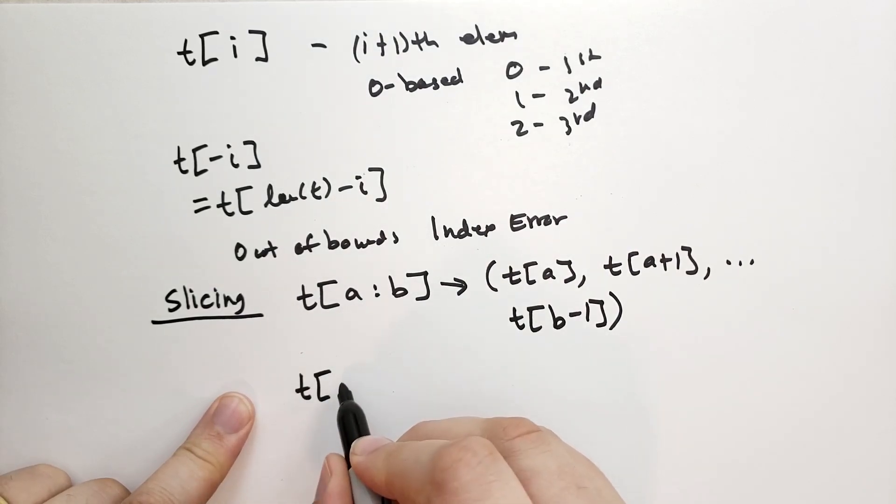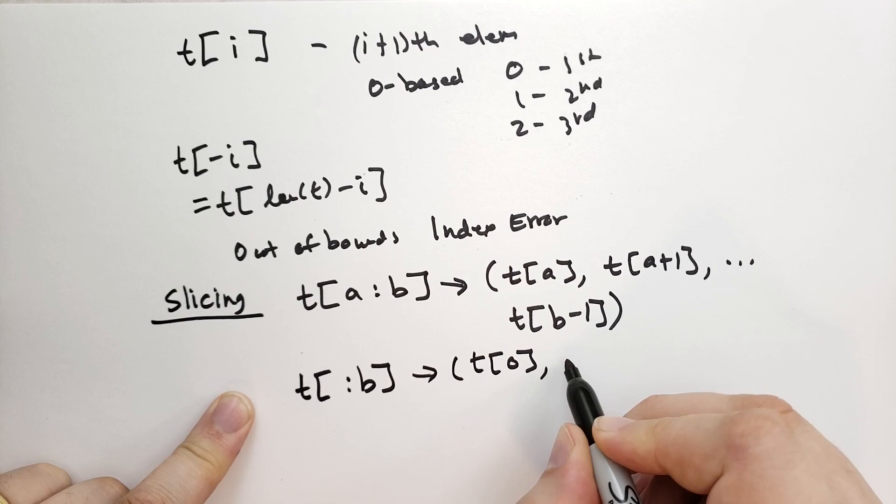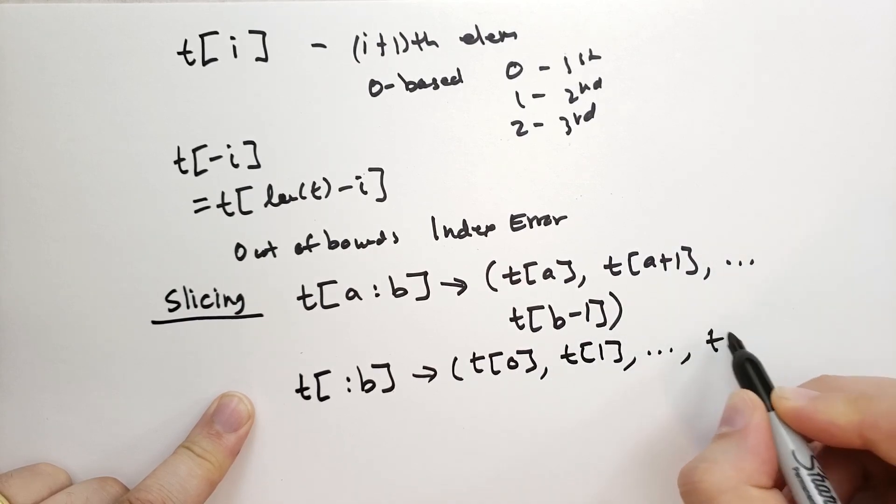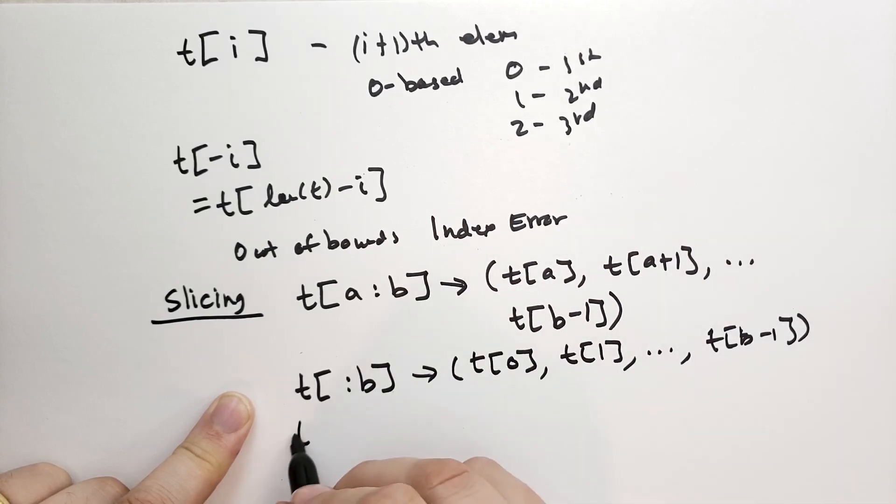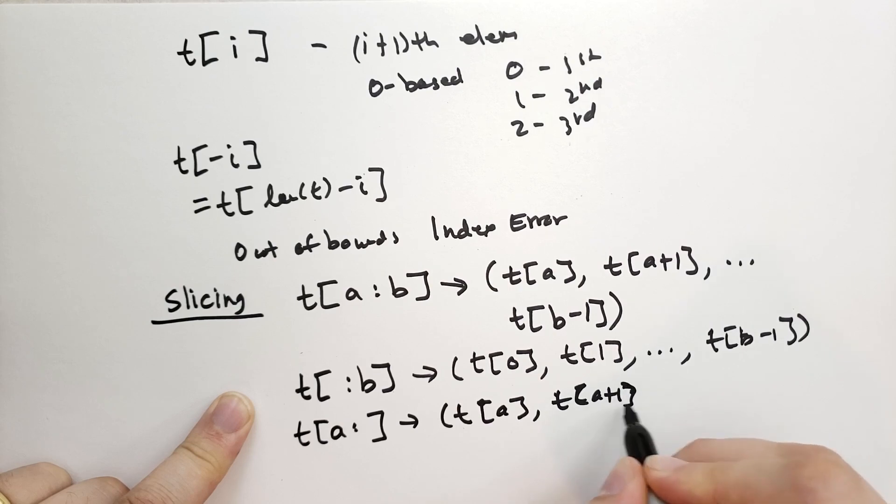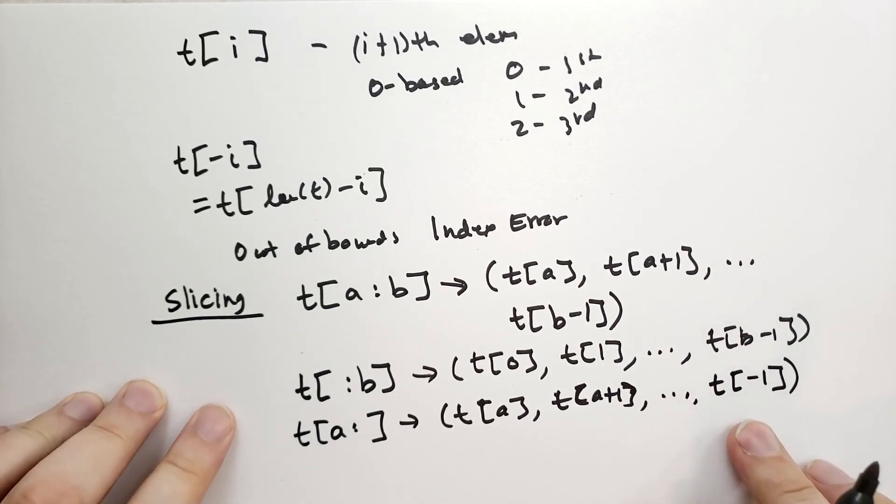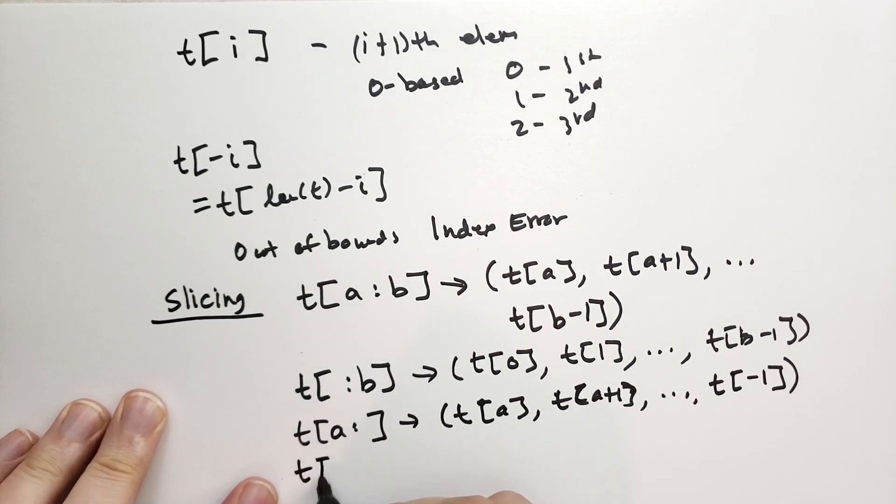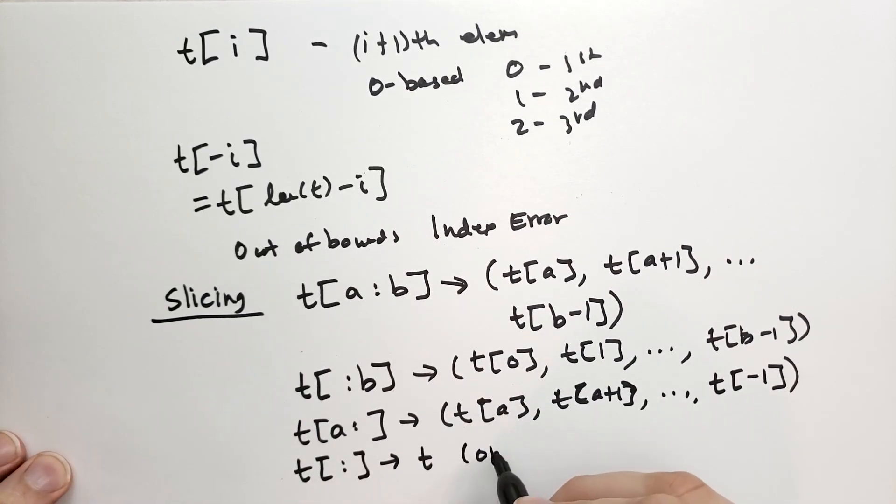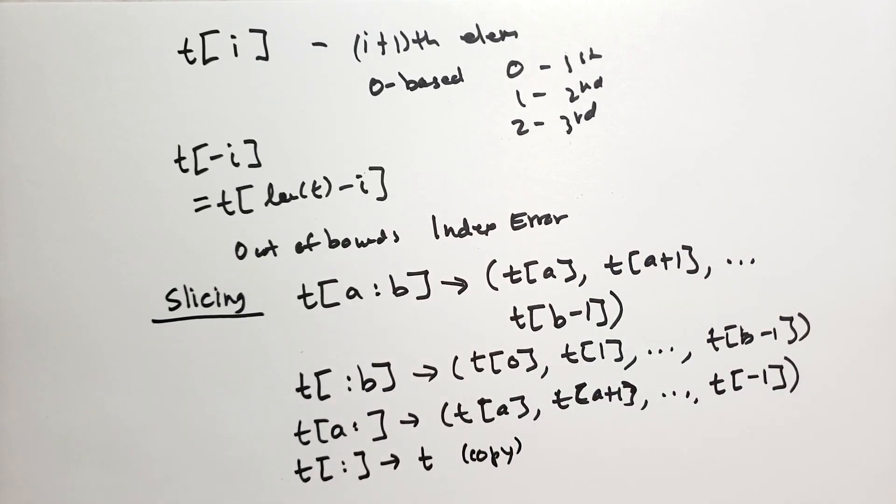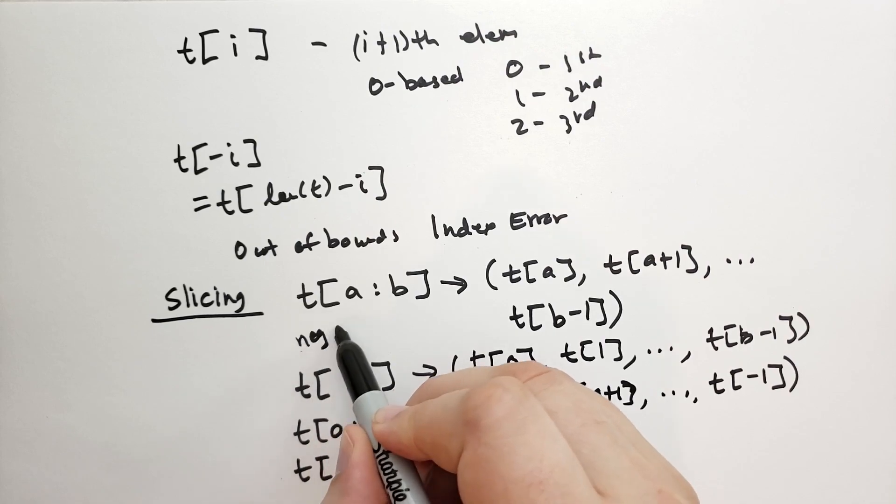If we are to drop one of the things, like let's say we have just t colon b, this means you start at t of 0, and then t of 1, and so on, up to t of b minus 1. And if we were to drop the other side, then this would start at t of a, then go to t of a plus 1, and so on, up to t of the end. And for the end, I'm just going to put minus 1. Minus 1 is the last element in the sequence. And if you were to have t with just a colon in the middle, then this would just give you basically t back. But it gives you a copy of t. And this works for strings, it works for bytes, it works for everything. Note that you can also use negative numbers. So negatives are okay.